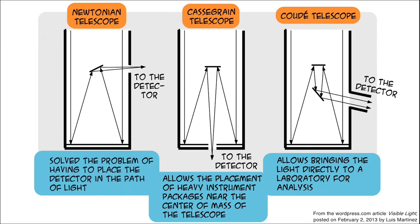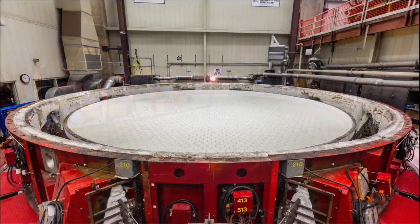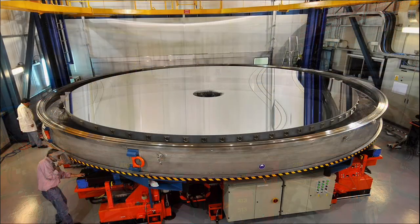In the Newtonian focus, the eyepiece can be easily attached in a convenient spot away from the path of light by redirecting the light out of the tube rather than putting the eyepiece in it. So how does the primary mirror of a reflecting telescope go from this, to this, to this?